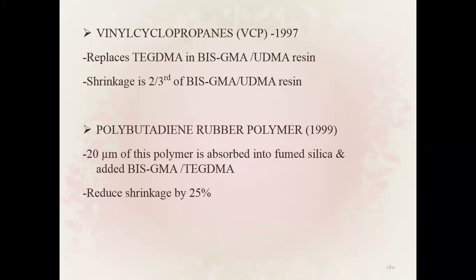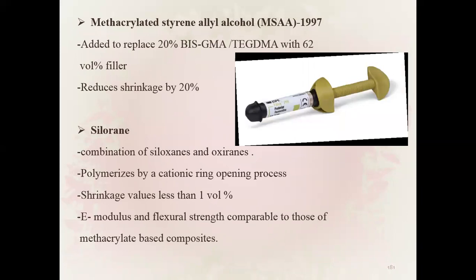Methacrylated styrene allyl alcohol added to replace 20 percent Bis-GMA and TEGDMA with 62 volume percent filler reduces shrinkage by 20 percent. Silorane is a combination of siloxane and oxiranes that polymerizes by cationic ring opening process; shrinkage values less than 1 percent by volume; elastic modulus and flexural strength comparable to methacrylate-based composites.